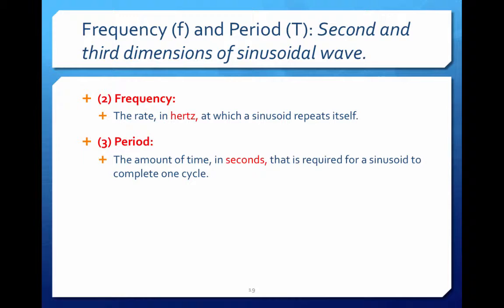The next dimensions of the sine wave that we're going to discuss are frequency and period. Frequency is the rate measured in hertz at which a sinusoid repeats itself. The period is the amount of time, measured in seconds, that is required for a sinusoid to complete one cycle.